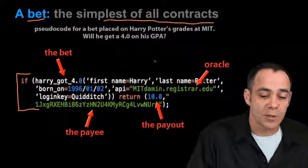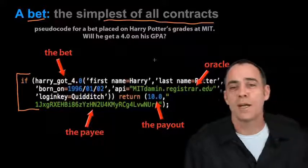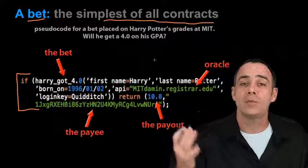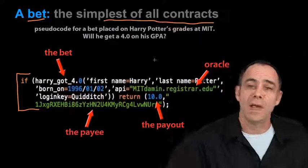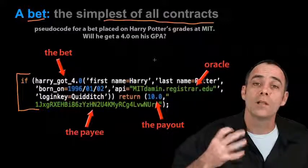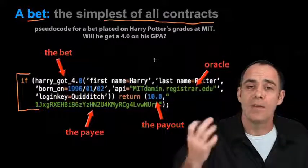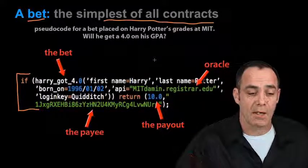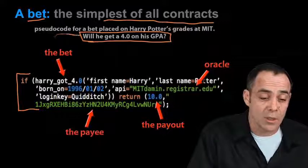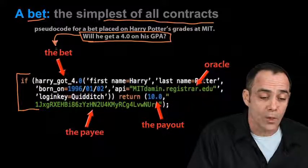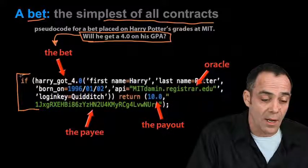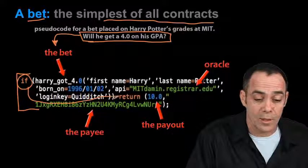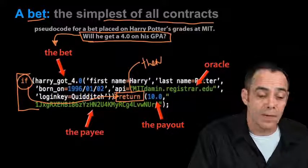This particular code is based on Harry Potter going to MIT and what his grades might be. Someone wants to make a bet that he's going to get a 4.0 GPA. Let's look into this code to get a full idea of what's going on. Here's our if, and this return over here is our then, and here's the bet.